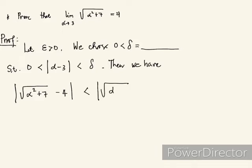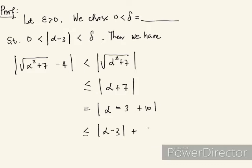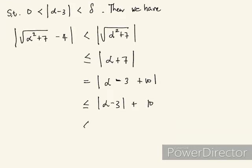We know this is less than the absolute value of the square root of alpha squared plus 7, which is less than or equal to the absolute value of alpha squared plus 7. Take note that this is equal to alpha minus 3 plus 10. And by the triangle inequality, this is less than or equal to the absolute value of alpha minus 3 plus 10, which I can write as just 10. So this is less than delta plus 10.